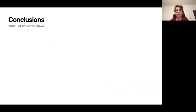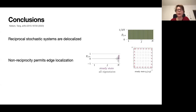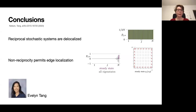In conclusion, topological invariants and topological structures lead to edge-localized states in quantum condensed matter systems. In our work, we showed that stochastic systems with reciprocal transition rates have delocalized dynamics, but introducing non-reciprocal transition rates permits edge localization — demonstrated for both one-dimensional and two-dimensional models. This localized steady state can lead to more robust biological functioning. Thank you to my supervisor Evelyn Tang, and thank you all for your attention.